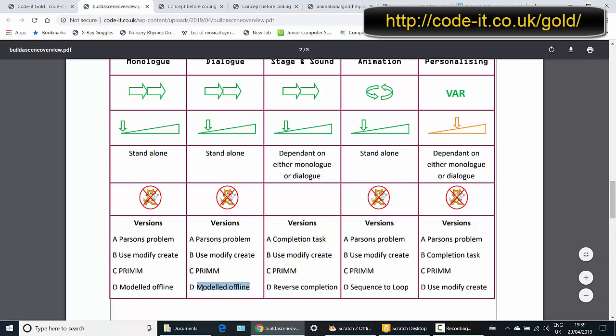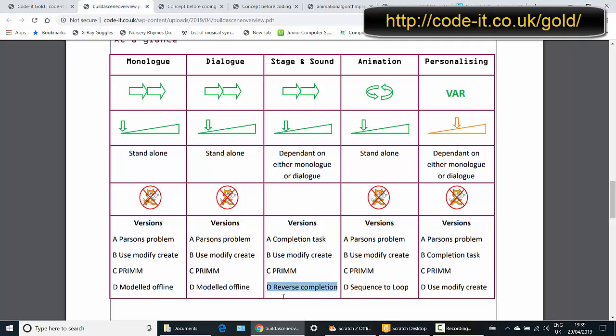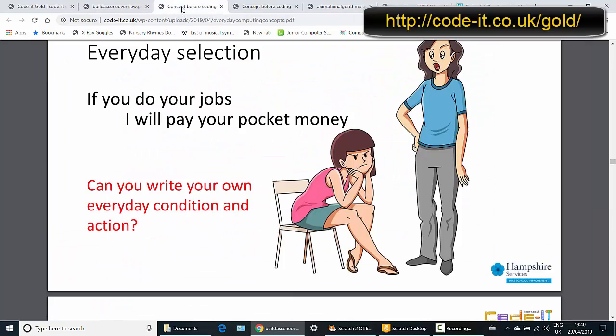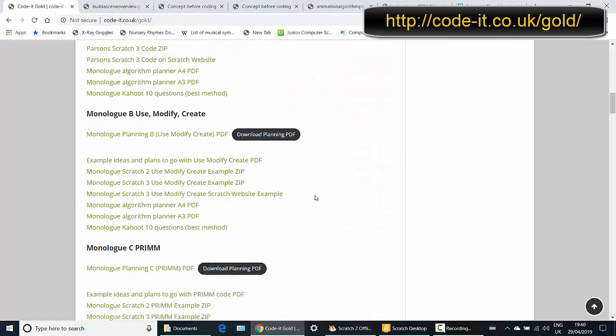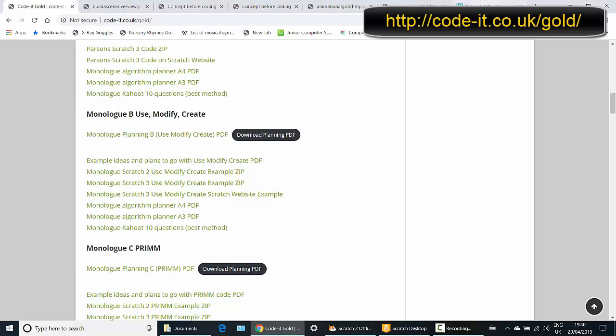We've also got some of the modeled offline aspects for some of these where we thought about how these work outside of code. And you'll also notice a reverse completion one in here for the stage and sound. And this is where we've given the children fully the code, but we have only given them a part complete algorithm. So they have to go back and do that. You'll notice there's a completion task in here. In this case, it's about some of the code is already built and they've just got a few bits that they need to put in and add to that. So all of the work is on the website and you can have a little look at it here. All the things are here for you to download and have a look at, including those quizzes as well.